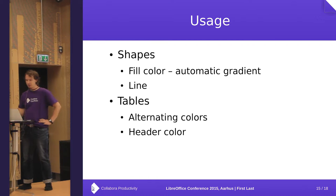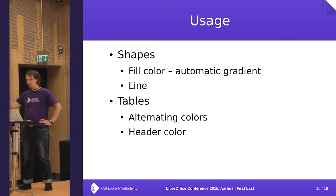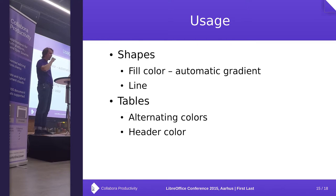For shapes, we can use accent colors for the fill, and maybe also create an automatic gradient that slightly modifies the accent color — for example, shading or tinting it a little — as well as colors for the border line, which could also be another accent color. For tables, we can easily define a table header using a specific accent color, and alternating colors for other rows.